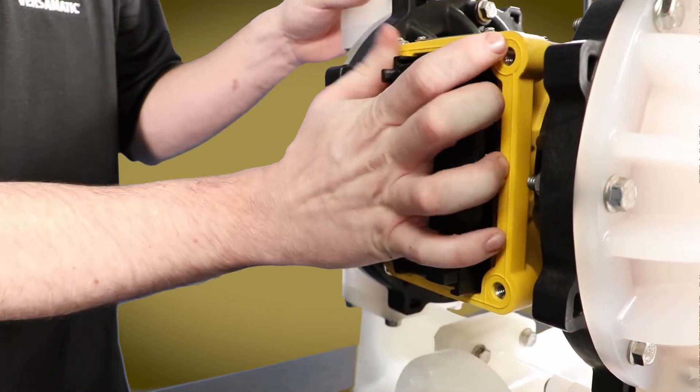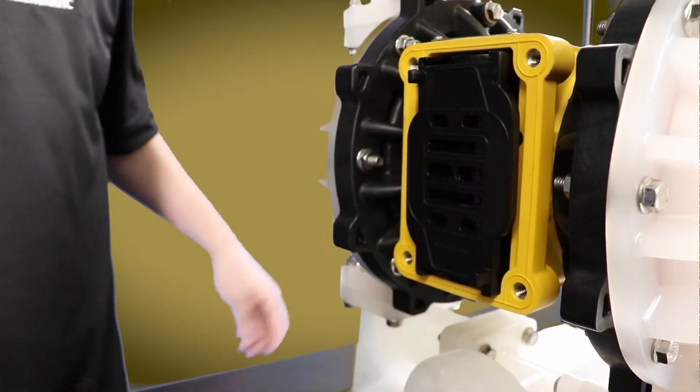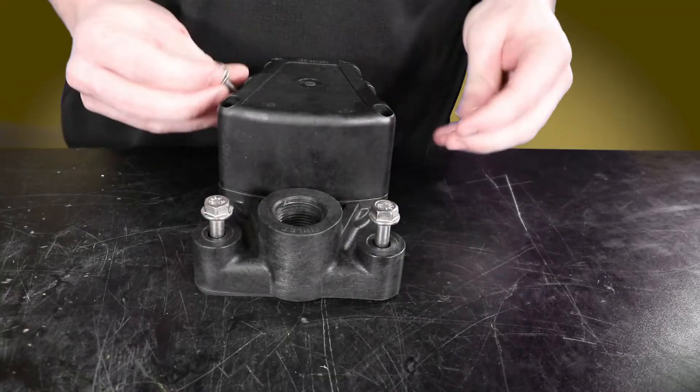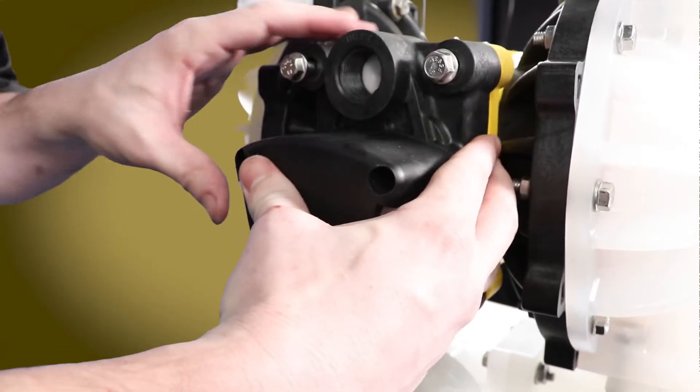Properly align the gasket so that it fits into the unique features of the air valve body. These features will help to hold the gasket into place during reassembly into the pump.